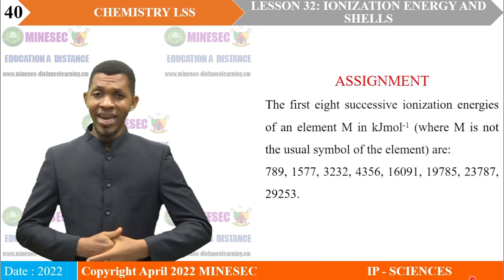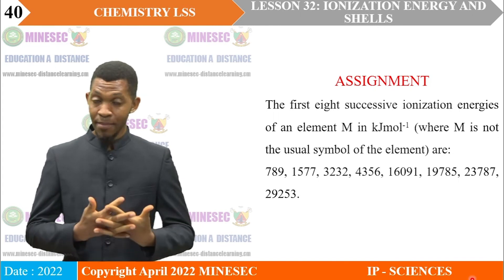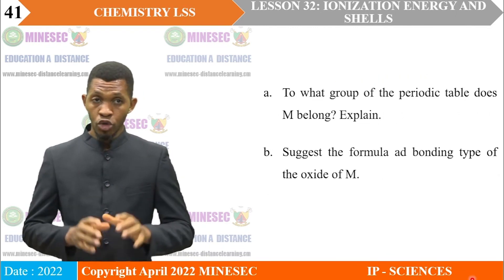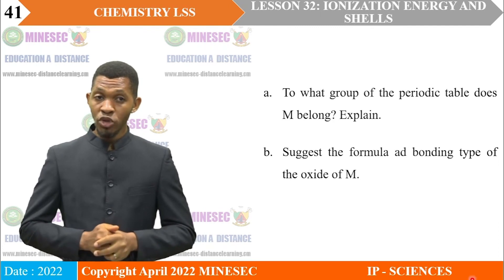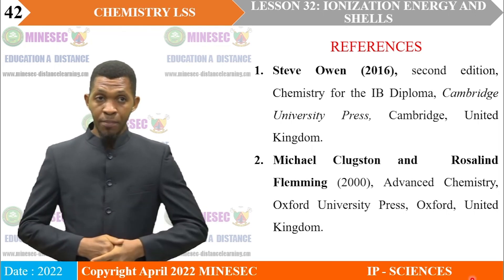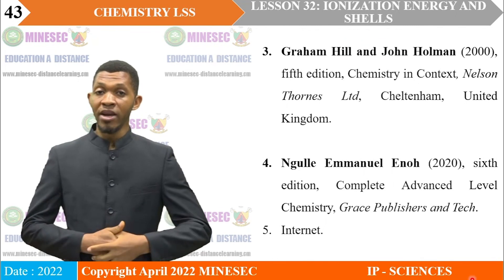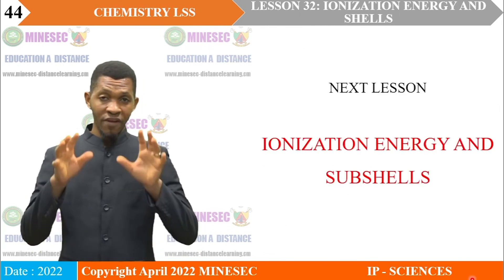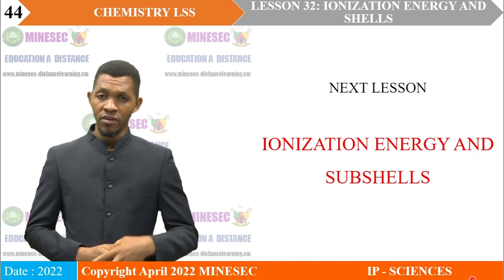Assignment: before our next lesson, answer this question — the first eight successive ionization energies of an element M in kJ/mol are given (M is not the usual symbol). To what group of the periodic table does M belong? Explain. Suggest the formula and bonding type of the oxide of M. References: Chemistry for IB Diploma by Steve Owen; Advanced Chemistry by Michael Clugston and Rosalind Fleming; Chemistry in Context by Graham Hill and John Holman; Complete Advanced Level Chemistry by Ule Emmanuel Eno; and the Internet. We have come to the end of this lesson. Our next lesson will be on ionization energy and subshells. See you in the next lesson.